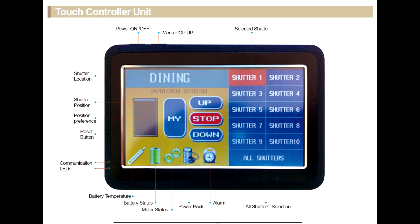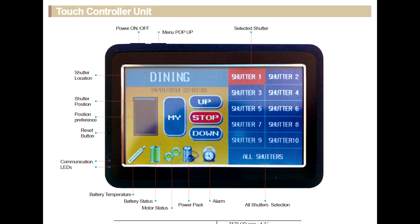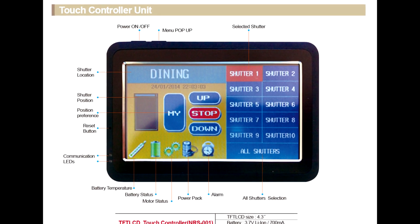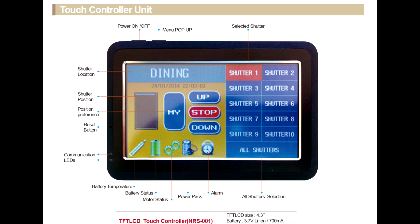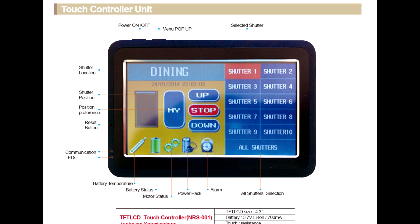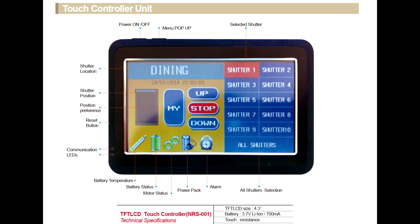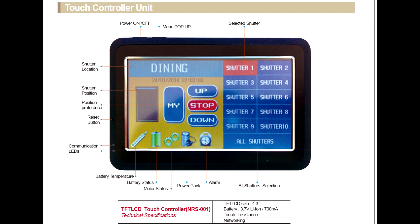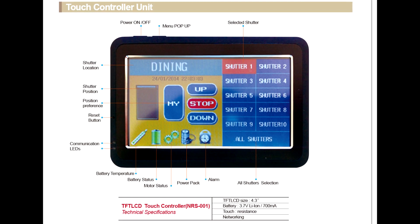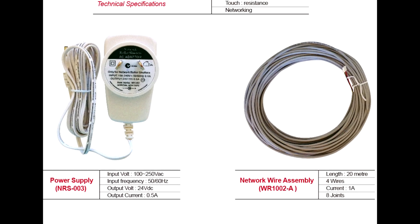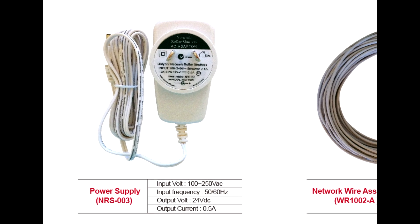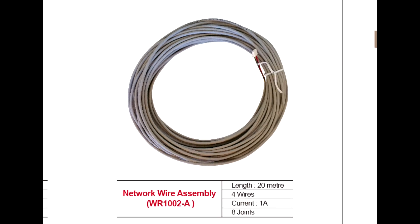Let's first look at the major components of network roller shutters. This is the touch controller. Usability has been greatly improved by a convenient GUI. It has RS-485 and Wi-Fi modem, so you can connect anywhere in the world through your mobile phone as well as indoors. It is the only power supply that supplies all the power needed for the entire system. This is a 20-meter wire assembly.